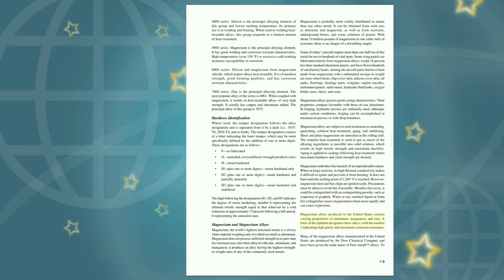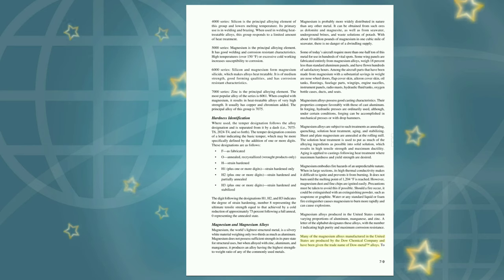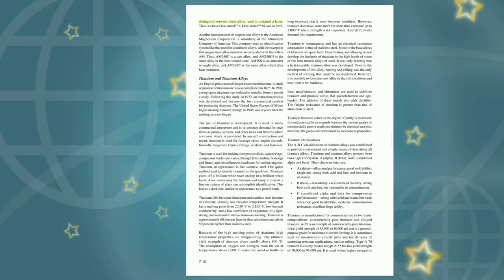Magnesium alloys produced in the United States contain varying proportions of aluminum, manganese, and zinc. A letter of the alphabet designates these alloys, with the number 1 indicating high purity and maximum corrosion resistance. Many magnesium alloys are produced by the Dow Chemical Company under the trade name Dow Metal. Another manufacturer is the American Magnesium Corporation, a subsidiary of the Aluminum Company of America, which uses an identification system like that for aluminum alloys, with magnesium alloy numbers preceded by the letters M. For example, AM240C is a cast alloy; AM240C4 is the same alloy in the heat-treated state. AM3S0 is an annealed rod alloy, and AM3SRT is the same alloy rolled after heat treatment.